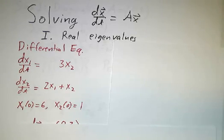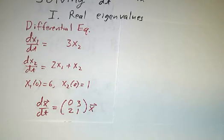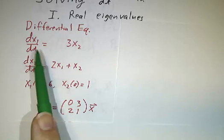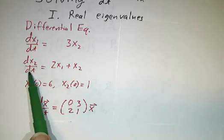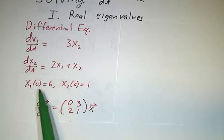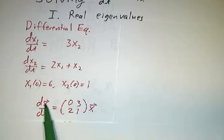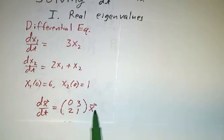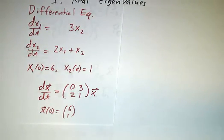Here's the kind of system that we're talking about. We're looking at differential equations, and this is a 2 by 2 system. Let's keep it simple. The derivative of the first variable is 3 times the second variable. The derivative of the second variable is twice the first plus the second. We'll take initial conditions: x1 is 6 and x2 equals 1. You can rewrite this in matrices — the derivative of the vector (x1, x2) is this matrix times the vector, and our initial condition is the vector (6, 1).